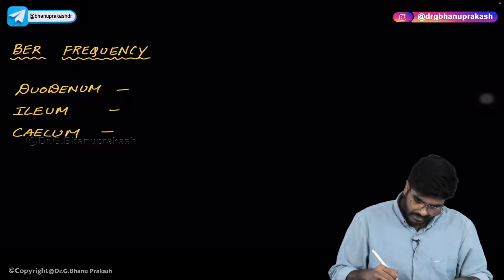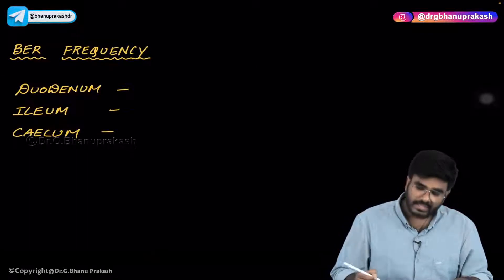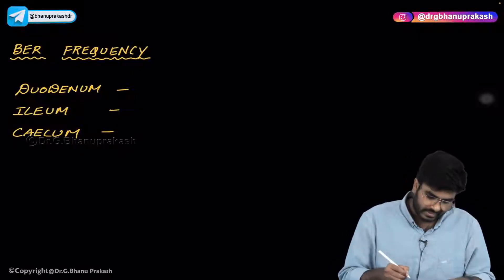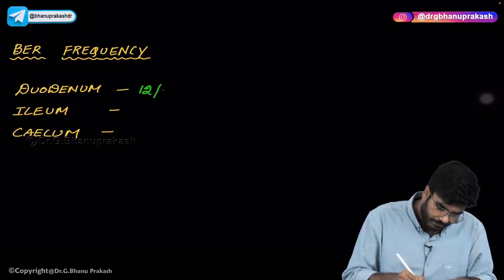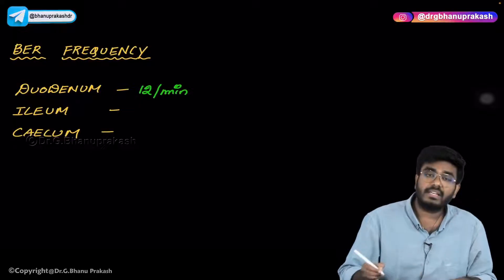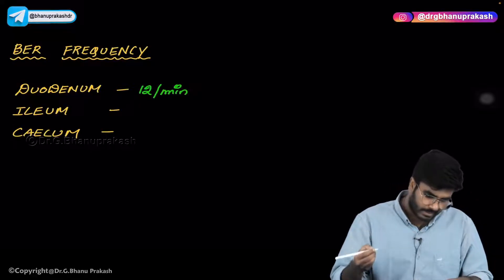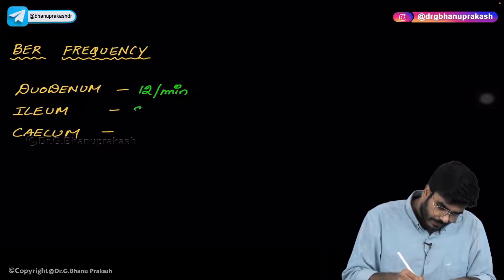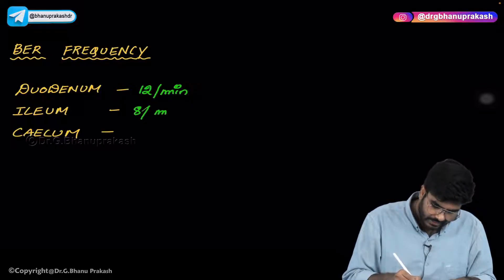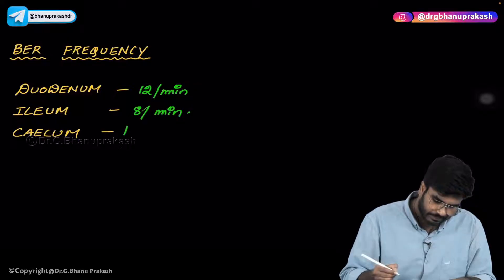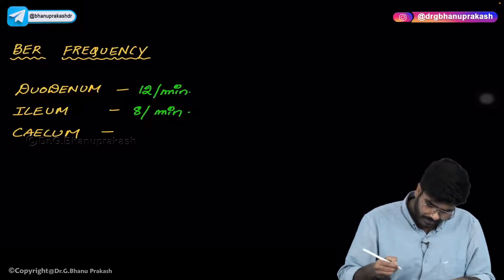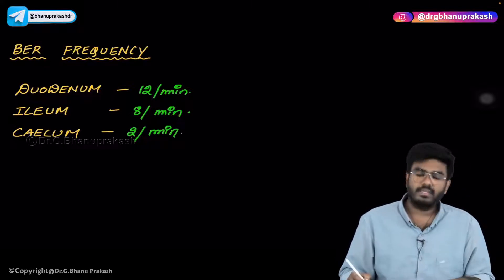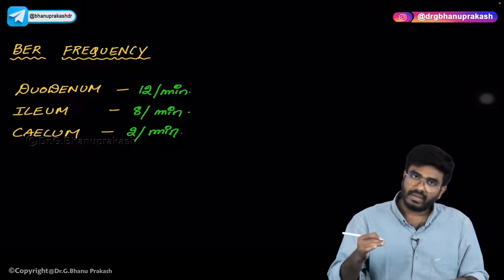Let's see the BER frequency in different parts of the intestine. In the duodenum, the BER frequency is 12 waves per minute. In the ileum, the BER frequency is 8 waves per minute. In the cecum, the BER frequency is very low — only 2 waves per minute.